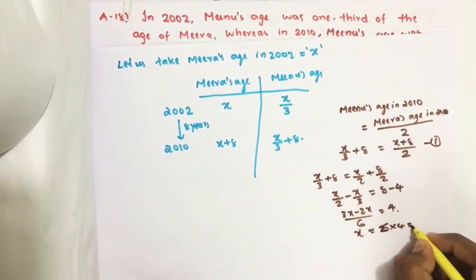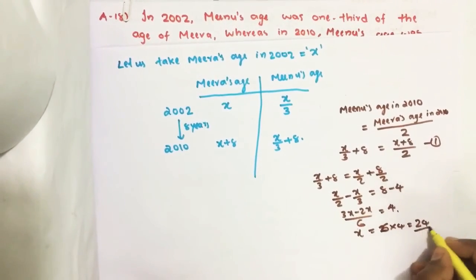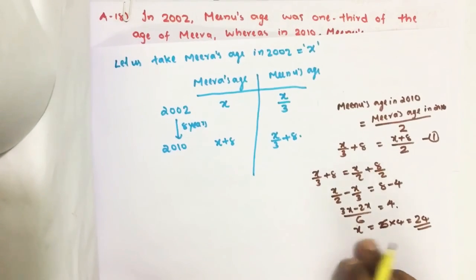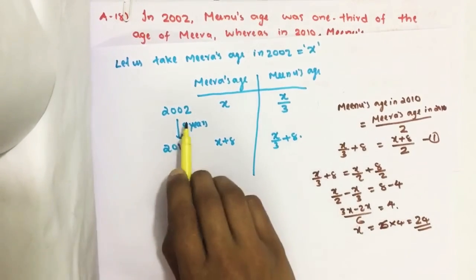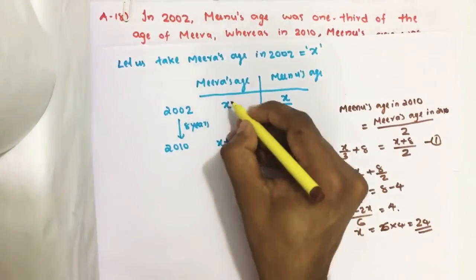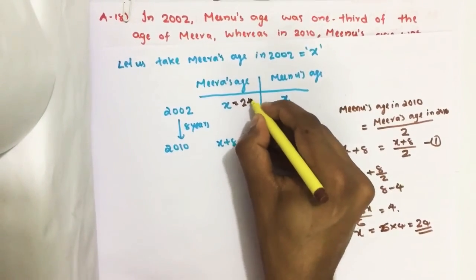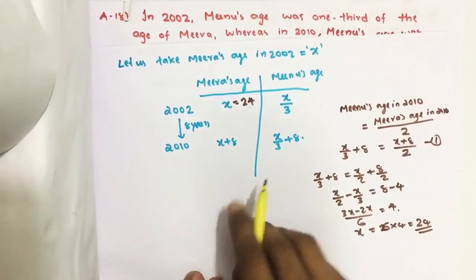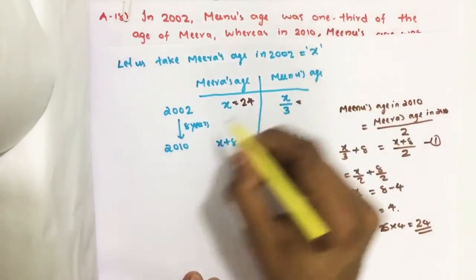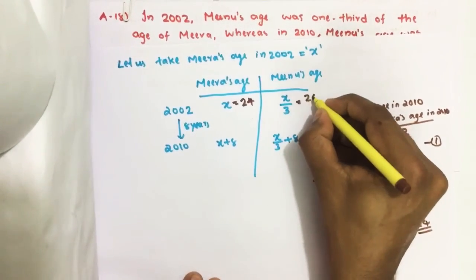6 into 4 is equal to 24, so X equals 24. What is X? X is the age of Mira in 2002, which equals 24. Then what is the age of Minoo in 2002? 24 divided by 3.